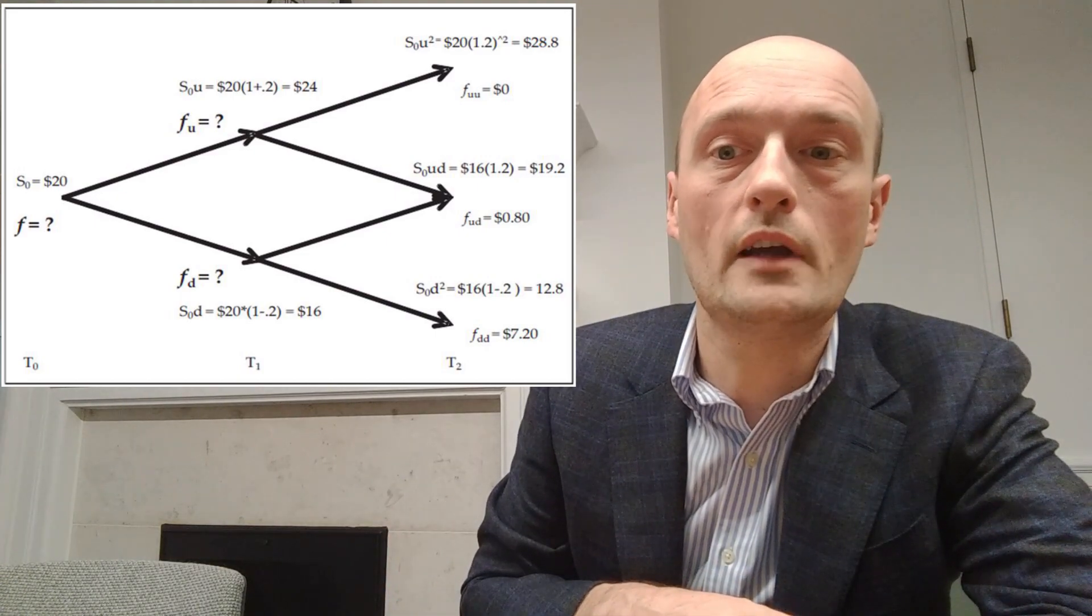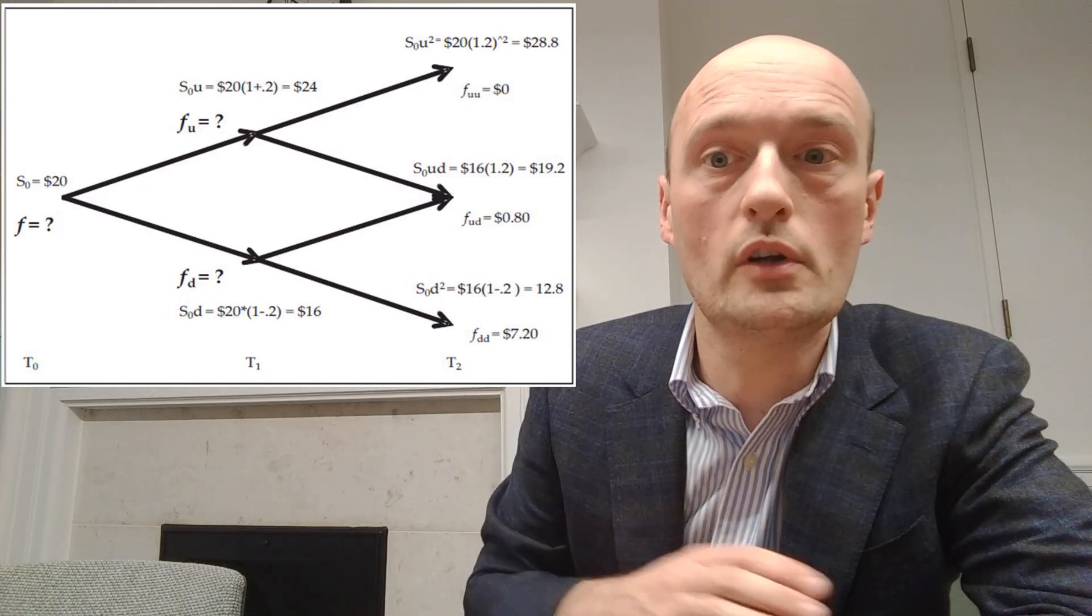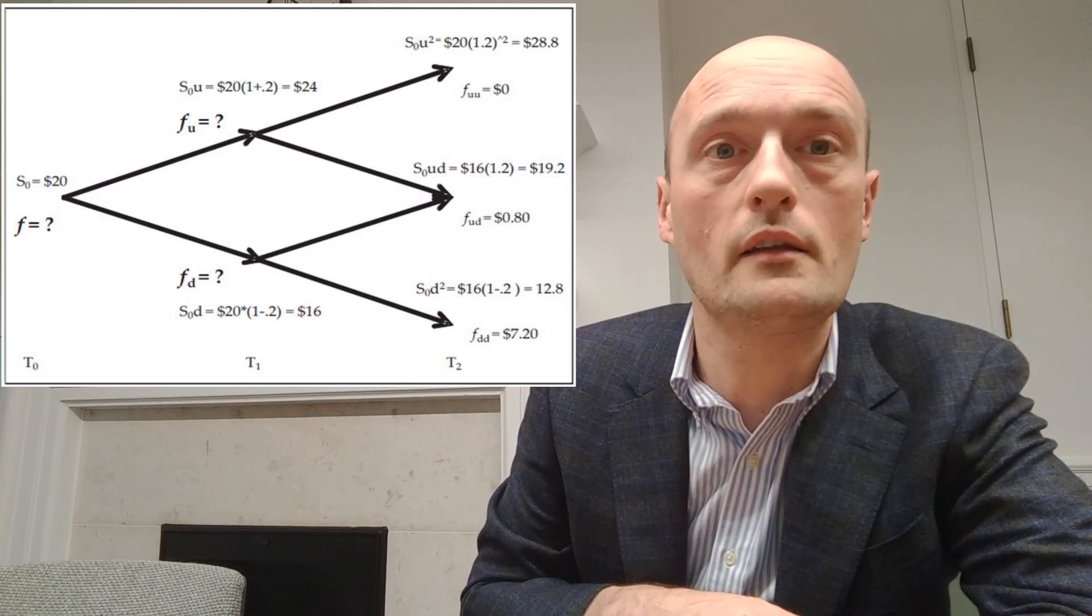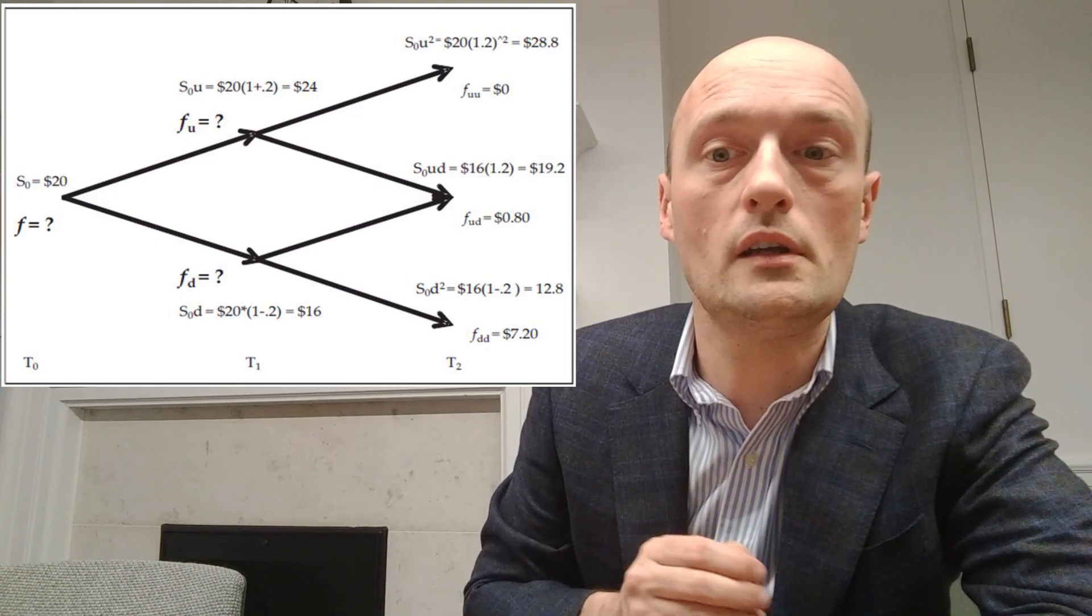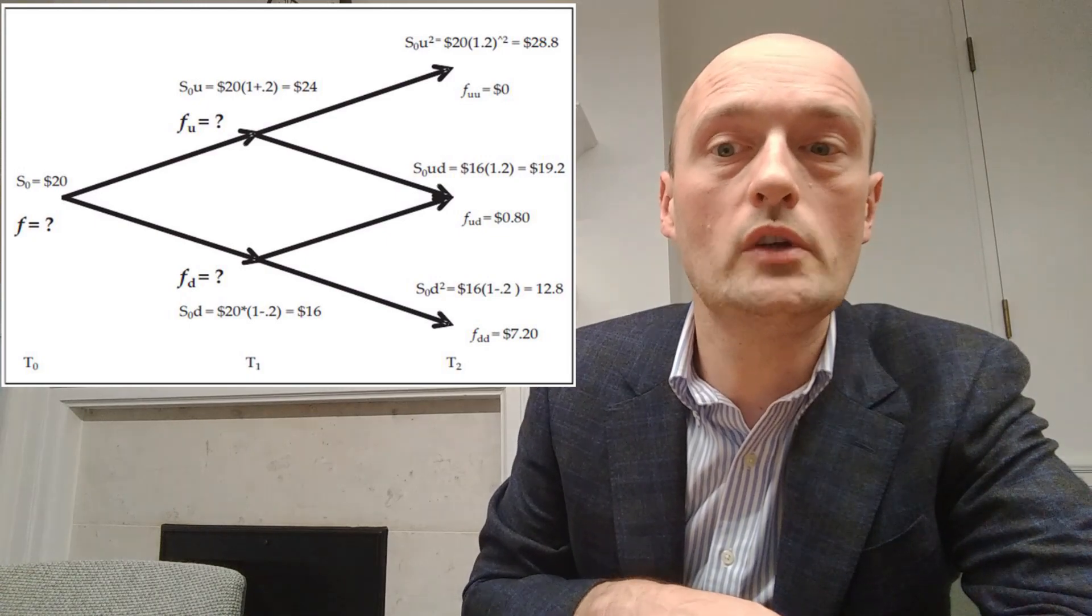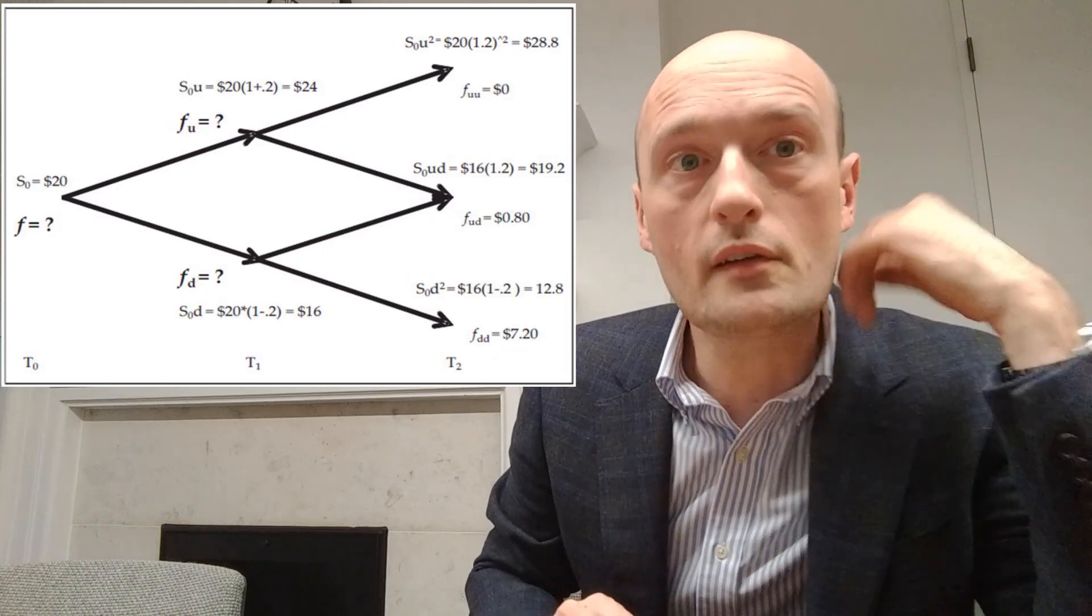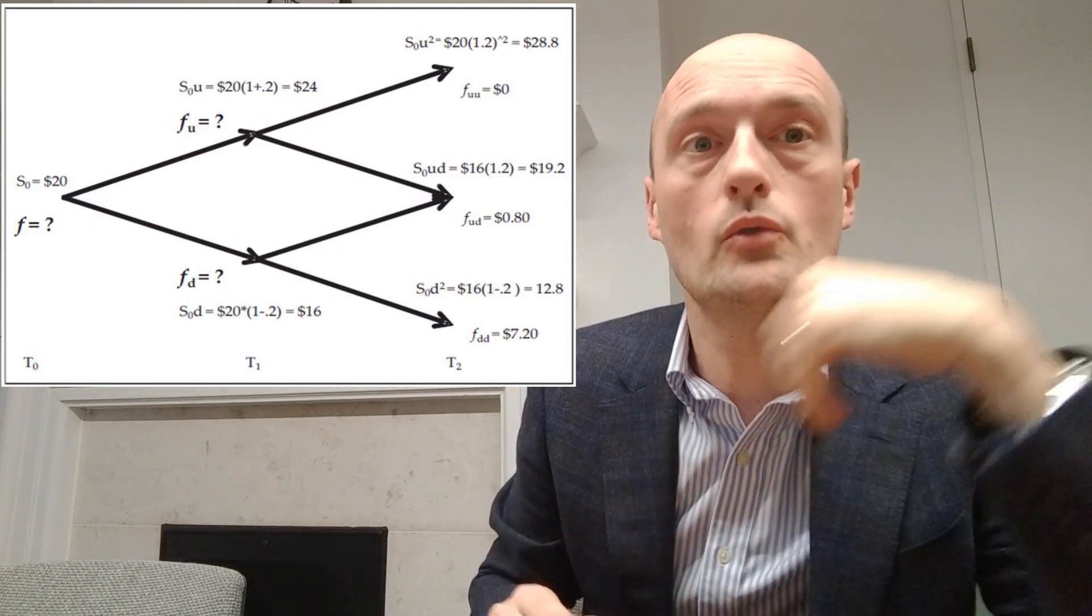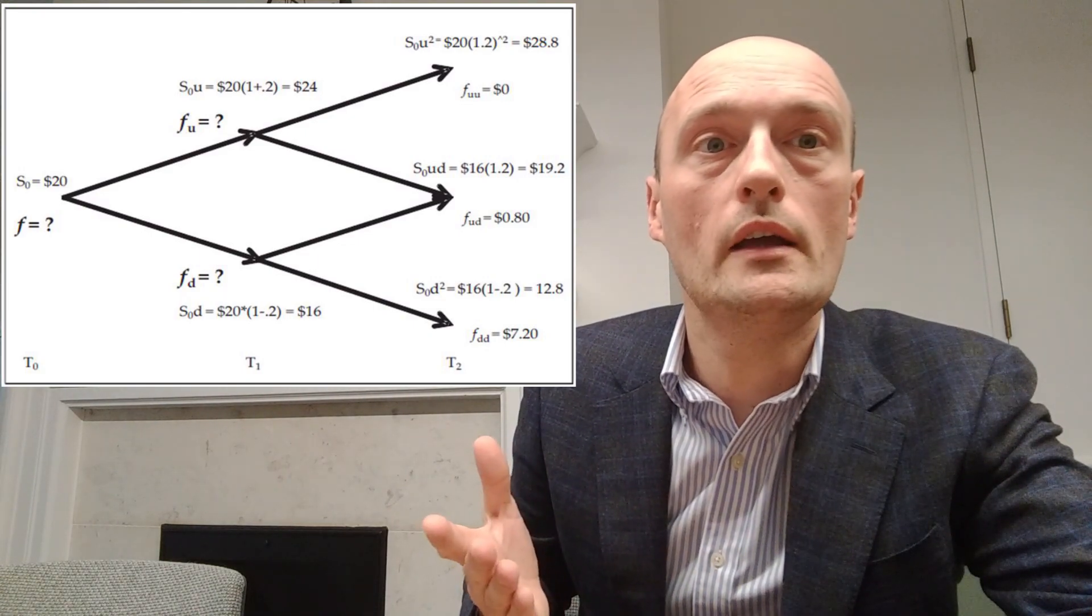And then finally in the down down scenario the underlying is at 12.8. The strike price of the put option was $20, so 20 minus 12.8 gives us $7.20. So we write FDD, the value of the derivative at the down down node, is worth $7.20.